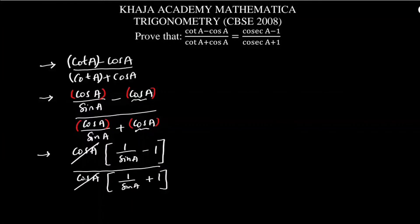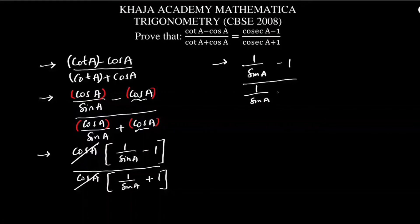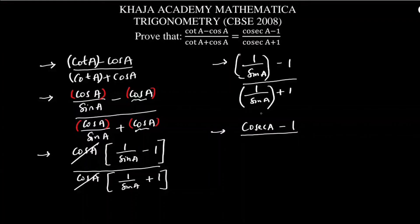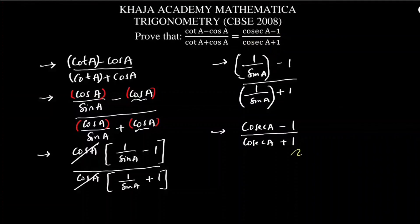Now cos A and cos A get cancelled. So I am left with (1 by sin A minus 1) by (1 by sin A plus 1). Now 1 by sin A is nothing but cosec A, because sin and cosec are reciprocals. So this becomes (cosec A minus 1) by (cosec A plus 1), which equals the RHS. Hence proved.